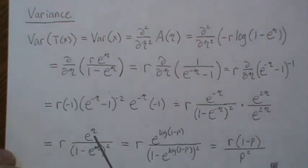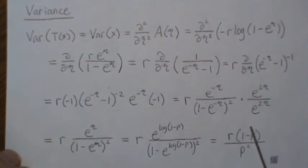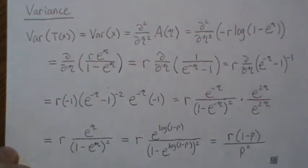But now we put in what we know about eta, which is log of one minus p, and then that comes to this. This is squared, so the e and the log cancel, we get p, p squared, and this is the variance of a negative binomial.